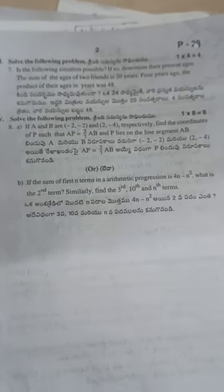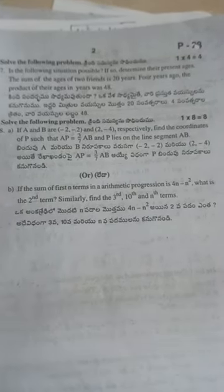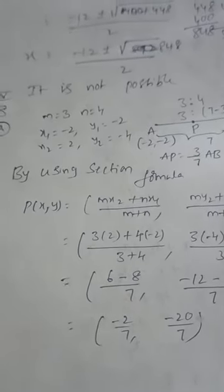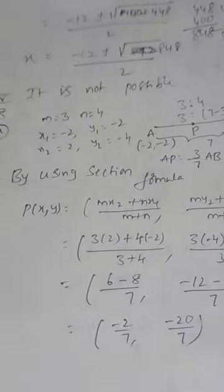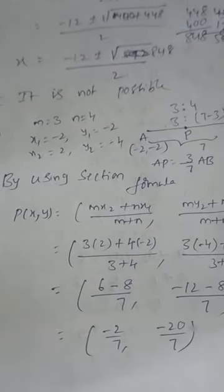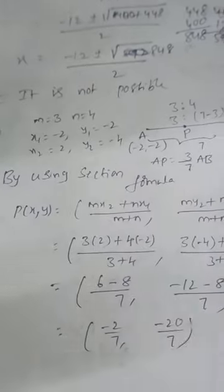If A and B are (−2, −2) and (2, −4) respectively, find the coordinates of point P such that AP = 3/4 AB and P lies on line segment AB. Using the section formula, P is (−1/2, −7/2), approximately (−2/7, −20/7).